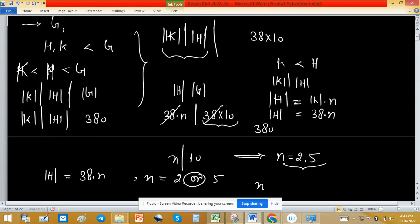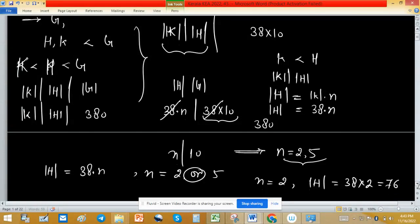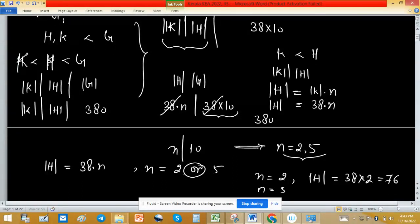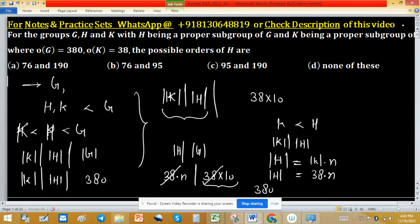When N equals 2, then order of H will be 38 into 2, means 76. When N equals 5, then order of H will be 38 into 5. Now which option is giving this result? Option A is correct.